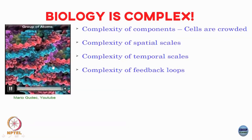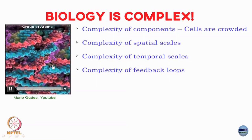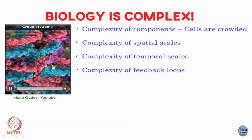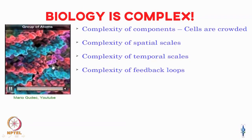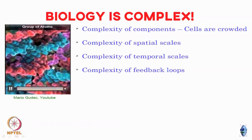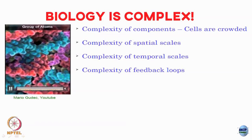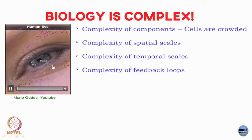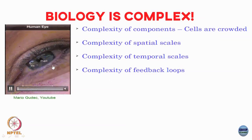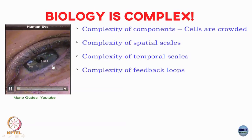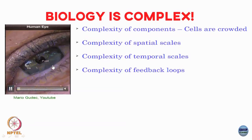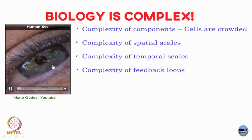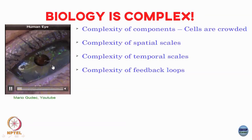Further, there is a complexity of feedback loops — everything talks to everything else. The DNA can produce a protein: DNA goes to RNA, goes to protein, and that protein can come back and bind on the DNA and affect the expression pattern of the DNA itself. Feedback loops are extremely common everywhere in biology.